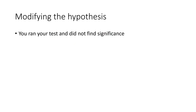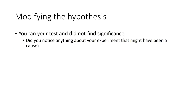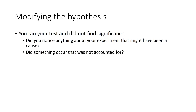Modifying the hypothesis. You ran your test and you didn't find significance. Did you notice anything about your experiment that may have been a cause? We ask a lot of questions because we want to question authority and pay attention to what's going on to see whether something might have caused something. You ran your experiment and didn't find any significance — does that mean it's a complete failure and you need to throw it out? No. You need to go back. You now have more observational data and material you can work with.